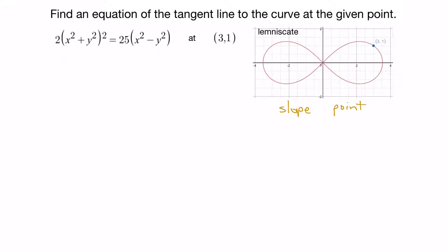Starting on the left side, we can use the power rule: 2 times 2 would be 4, giving us (x² + y²), and we take away 1 from the exponent, leaving exponent 1. Of course we'll also have to use the chain rule, so we take the derivative with respect to x of x² + y².